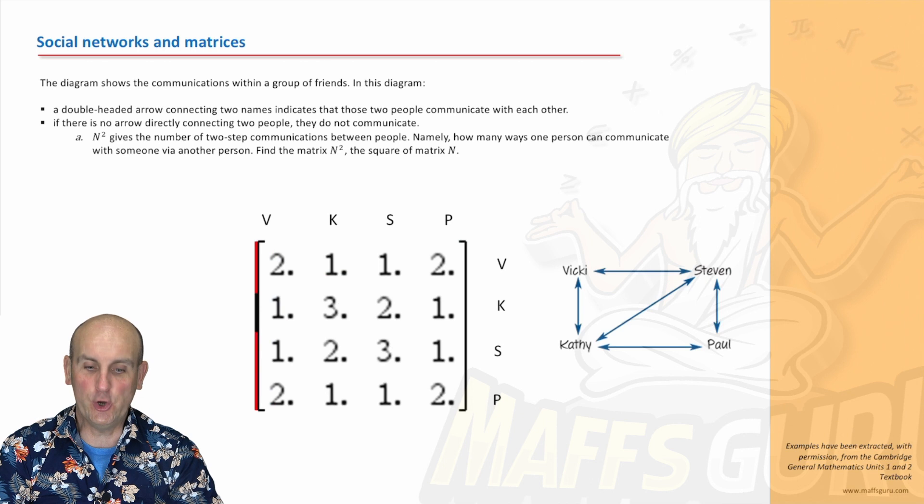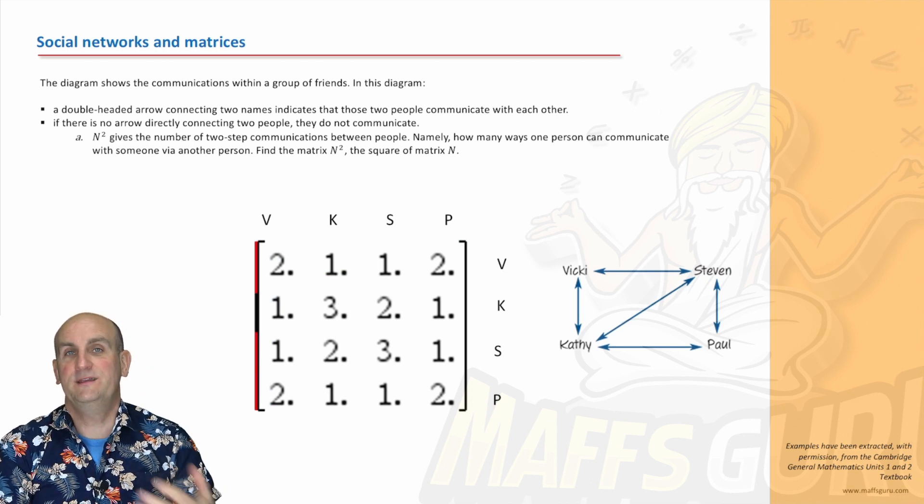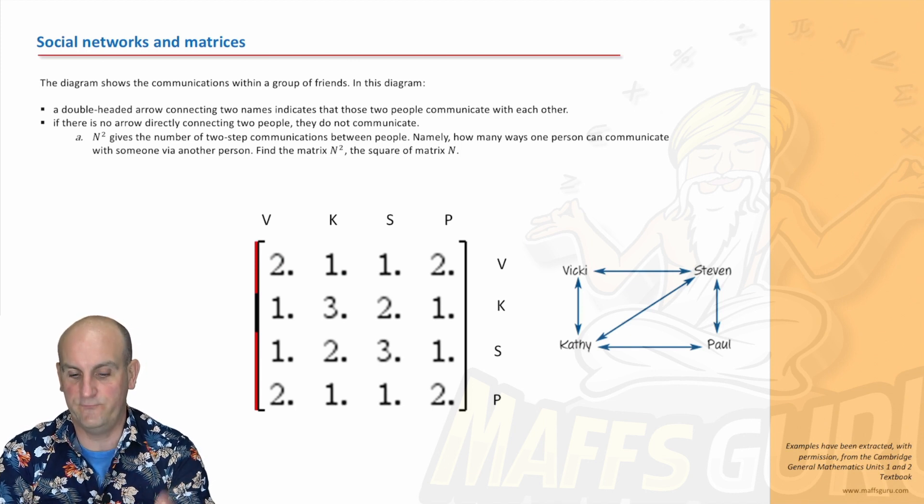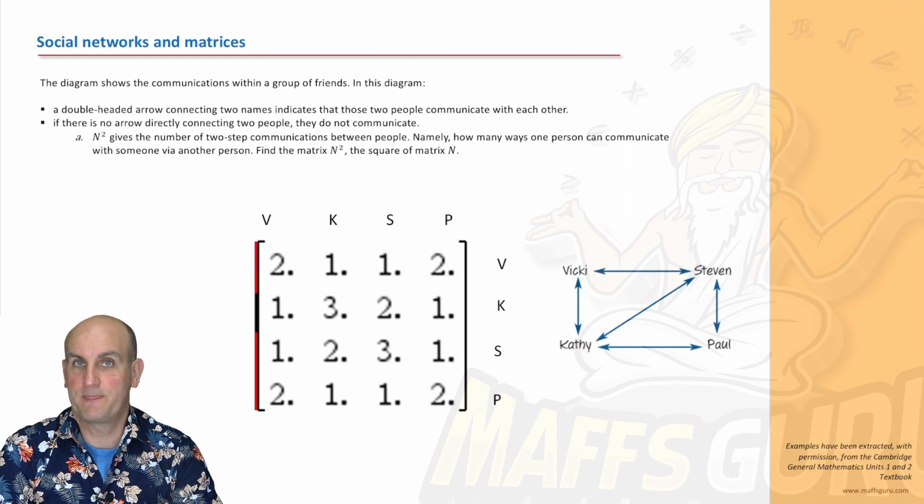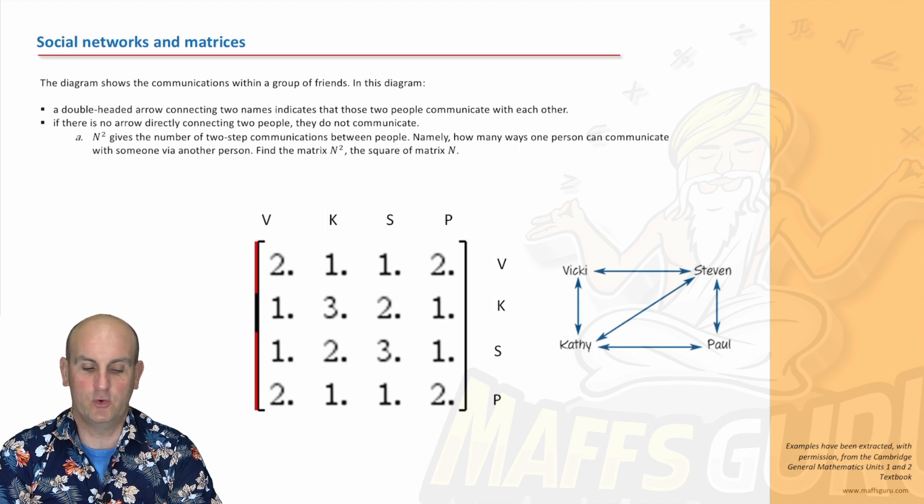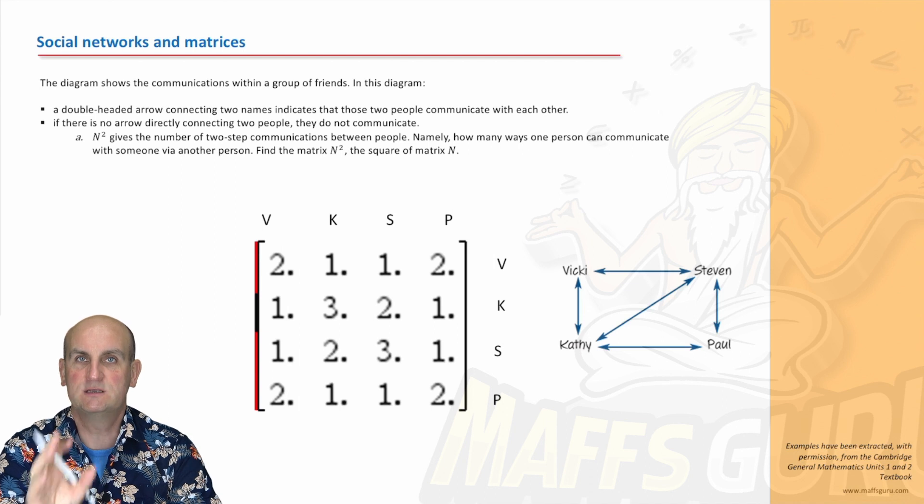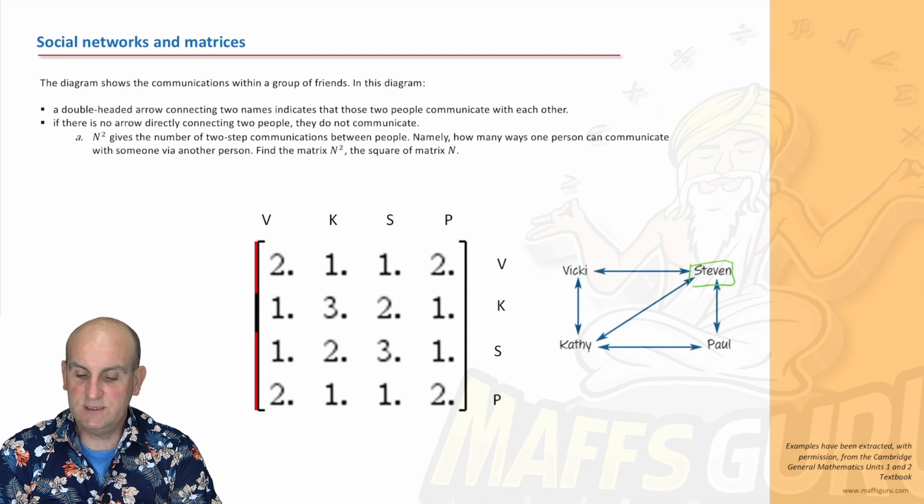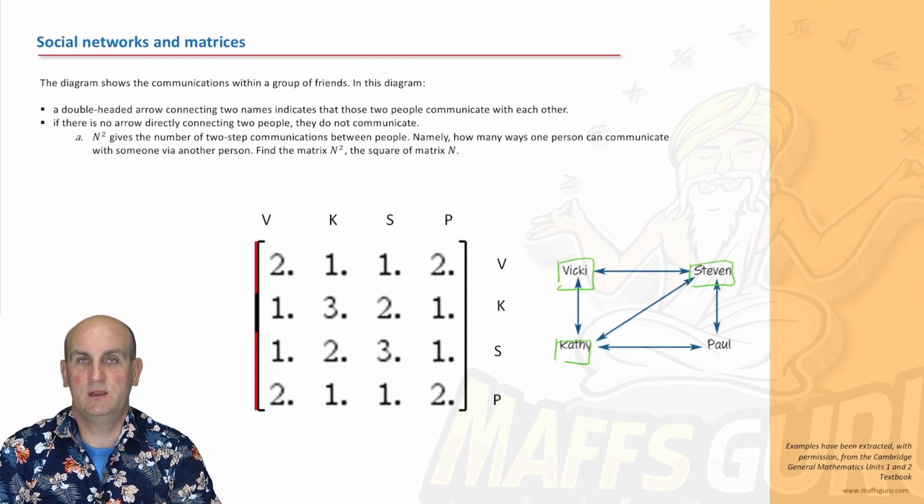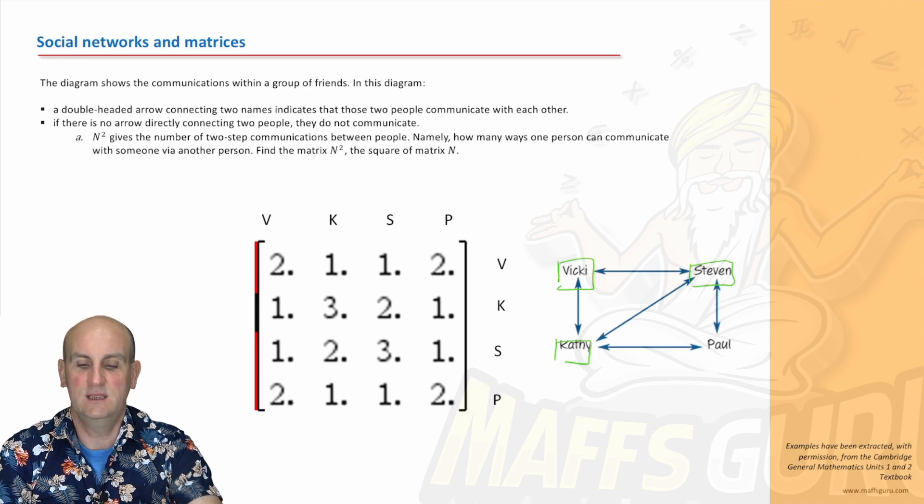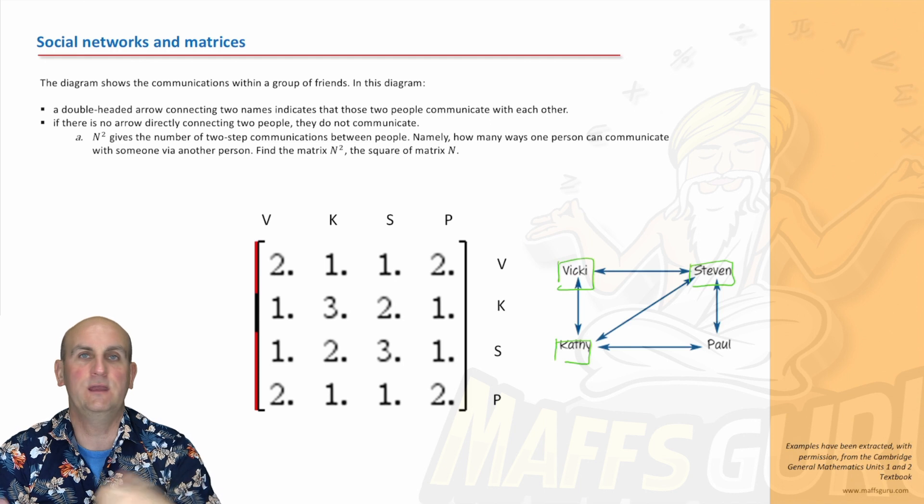N squared? What is N squared? The problem about this general maths course is it's setting you up for next year. If you're going to do further maths, it gets a little bit more tricky. But N squared is what we call a two-step communication. What does that mean? It means Stephen can talk to Kathy via Vicky. That's a two-step communication, using two stages to get a message.